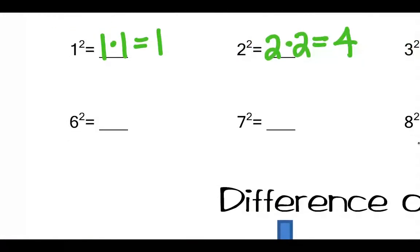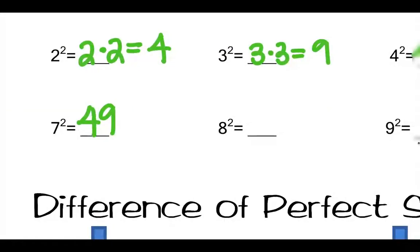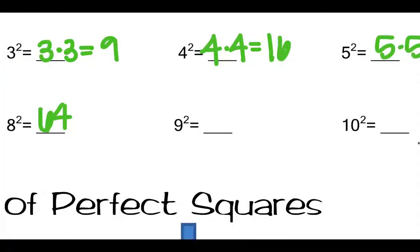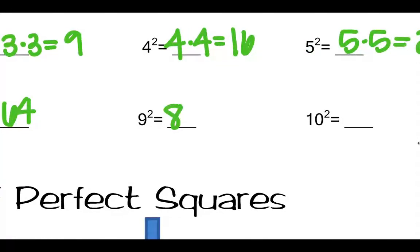5 times 5 gives me 25. Then 6 times 6 is 36. 7 times 7 is 49. 8 times 8 is 64. 9 times 9 is 81, and then 10 times 10 is 100.